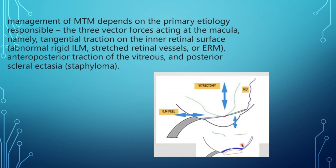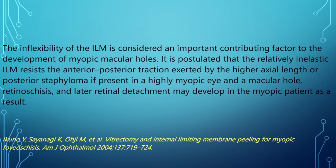There are three vector forces acting at the macula. The first is tangential traction on the inner retinal surface, caused by an abnormal rigid ILM, stretched retinal vessels, or an epiretinal membrane. The second is anteroposterior traction of the vitreous and posterior scleral ectasia. The inflexibility of the ILM is an important contributing factor to the development of myopic macular holes, as the relatively inelastic ILM resists anterior-posterior traction, potentially causing macular holes, retinoschisis, and retinal detachment.